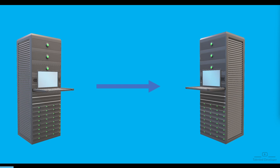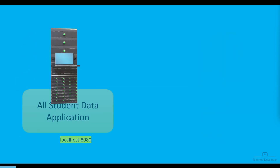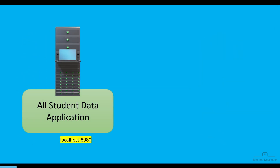So what does 'event occur' mean here? Let's try to understand with an example. Imagine a student data application that holds all the student data of an entire city or state, and that application runs on localhost port 8080.